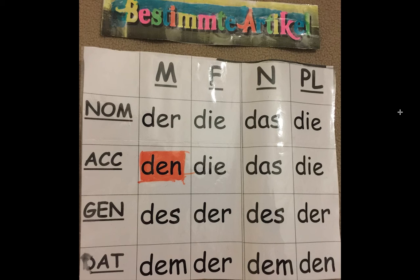For the accusative: der goes to den, die goes to die, das goes to das, die goes to die. So the rhyme is: der goes to den, the rest stays the same.